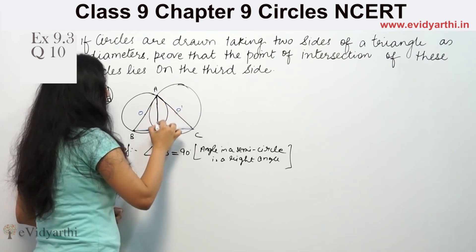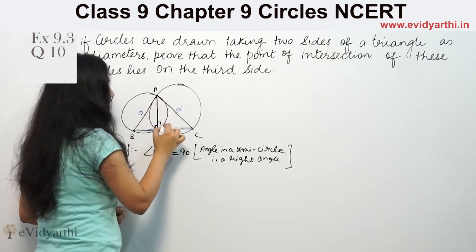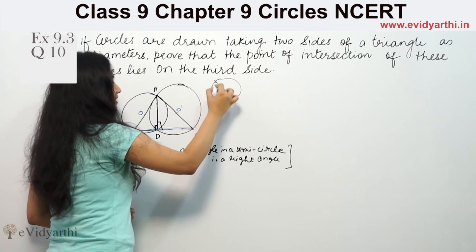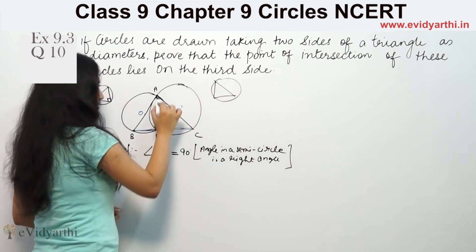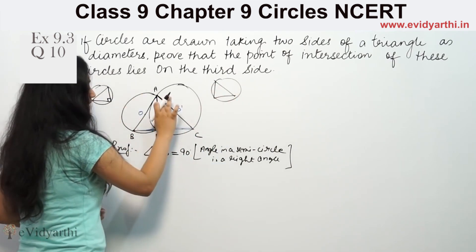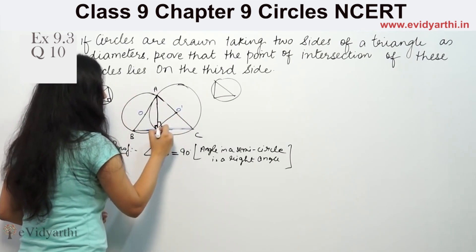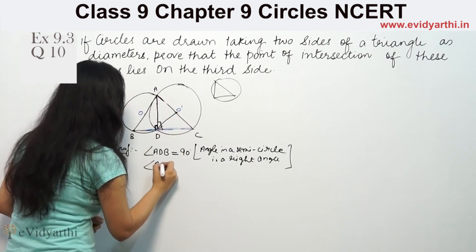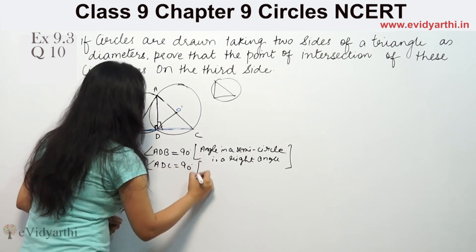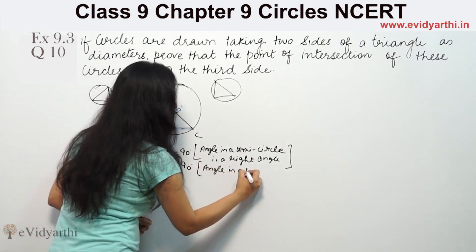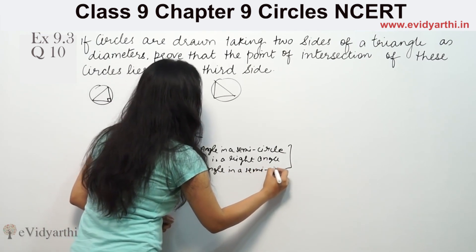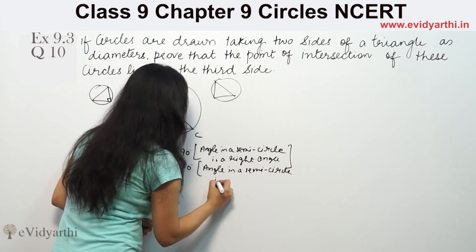Similarly, angle ADC is also 90 degrees because it's in a semicircle. Angle in a semicircle is a right angle. So again, angle ADC is equal to 90 degrees. Angle in a semicircle is a right angle.